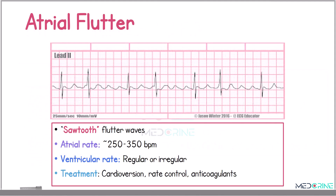The next rhythm is atrial flutter. Atrial flutter exhibits sawtooth flutter waves, typically with an atrial rate of between 250 to 350 beats per minute. The ventricular rate in this rhythm is regular, or sometimes irregular. Treatment includes cardioversion and the use of anticoagulants.